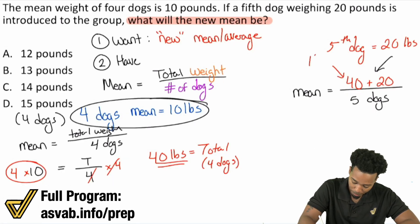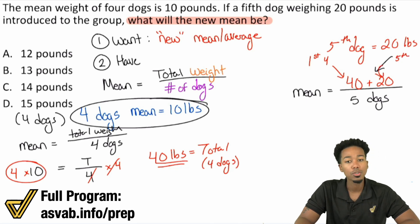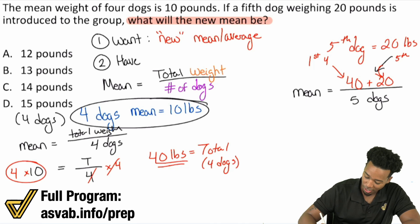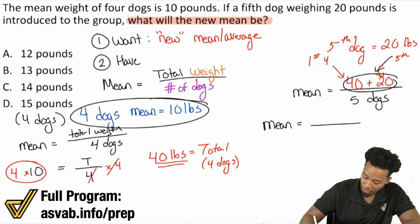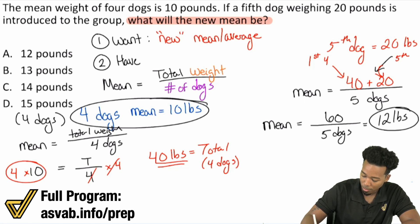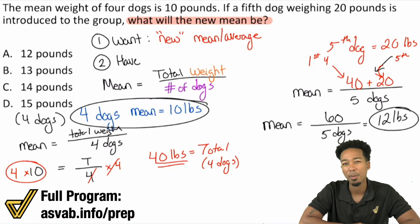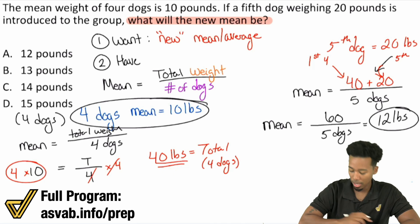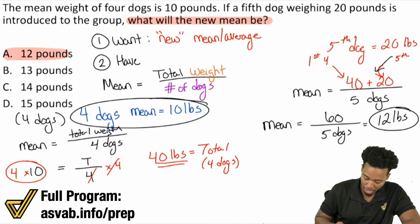This is the first four dogs, and this is the fifth dog. So now we can solve this. The mean of the five dogs — the average weight — is 40 plus 20, which is 60, divided by five dogs. That equals 12 pounds per dog, an average weight of 12 pounds. And there it is. A is the answer.